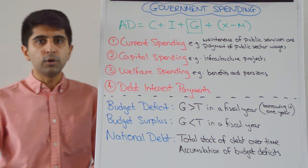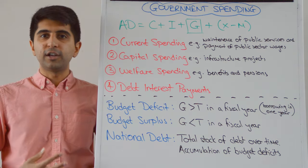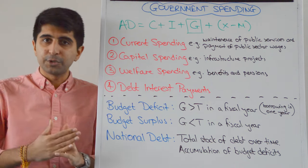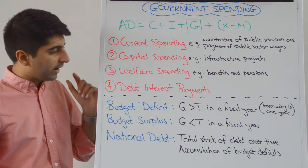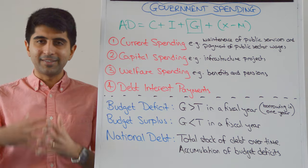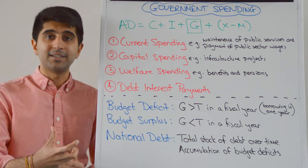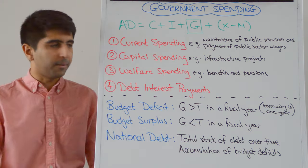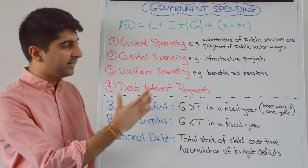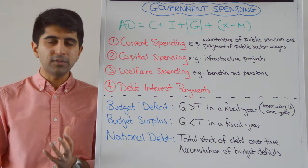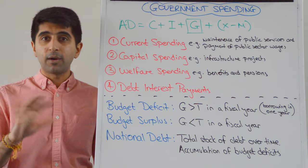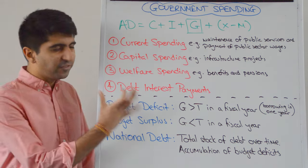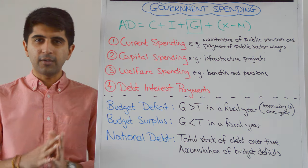It's important to know that types 1, 2, and 3 — current spending, capital spending, and welfare spending — would all act as an injection into the circular flow of an economy and would shift aggregate demand to the right. Whereas debt interest payments would not, as they are not necessarily staying in the country. Debt interest payments carry a huge opportunity cost — in the UK they are around £50 billion per year. To put that into context, state schooling is around £90 billion and the NHS costs around £110 billion, so £51 billion a year in debt interest carries a huge opportunity cost.